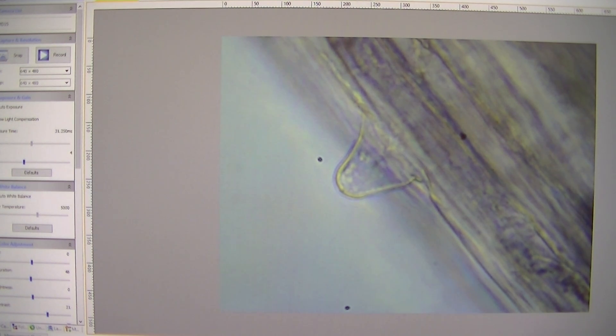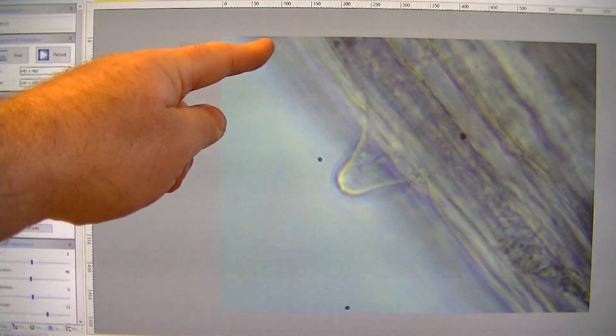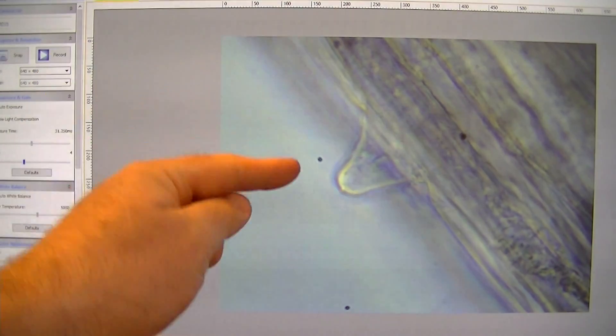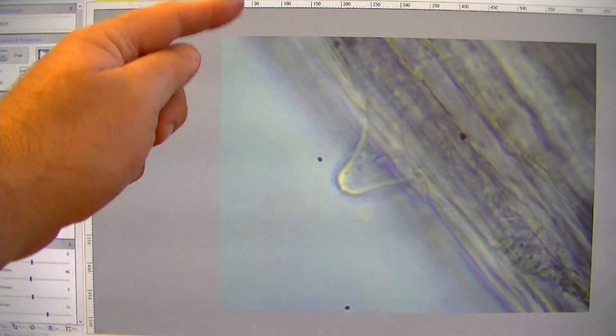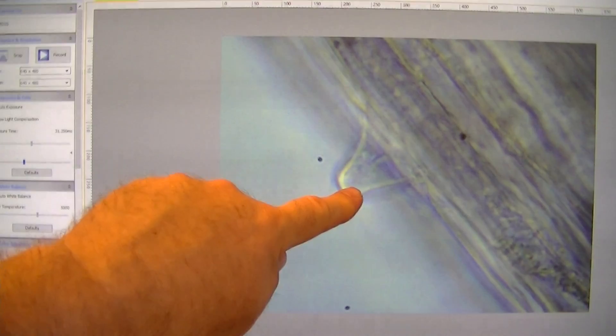Now, the only part that it grows on in the whole root that you saw is towards the root tip down here, the very end. Now, they start way up at the top and grow down, and they'll die off. Every two to three weeks, they will die off and produce more root hairs.